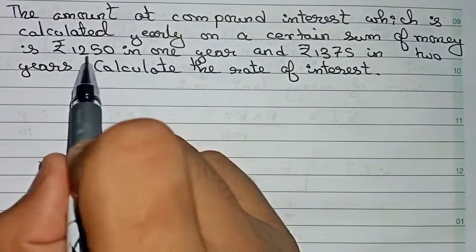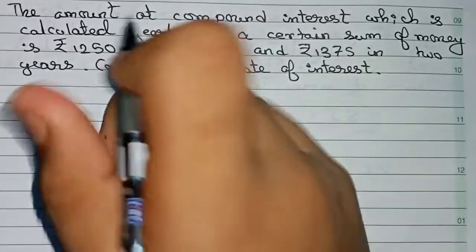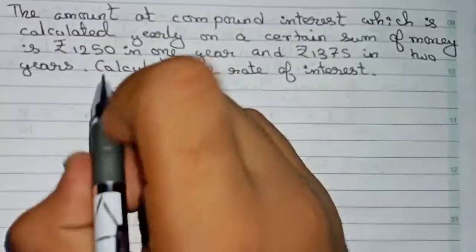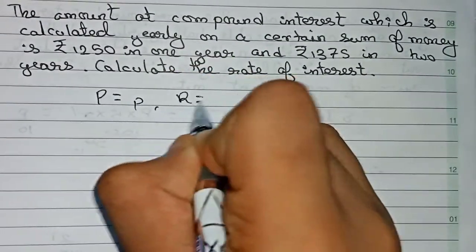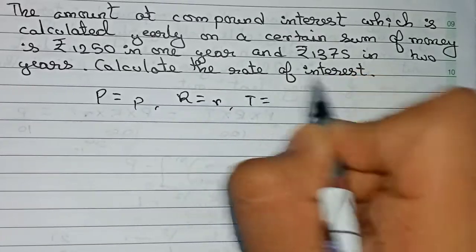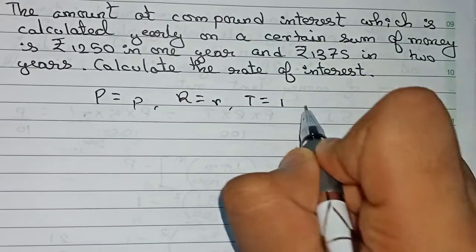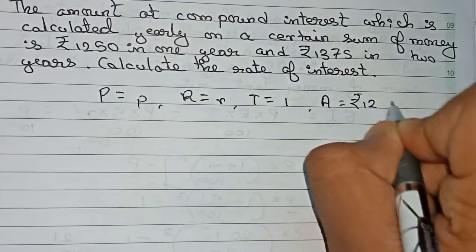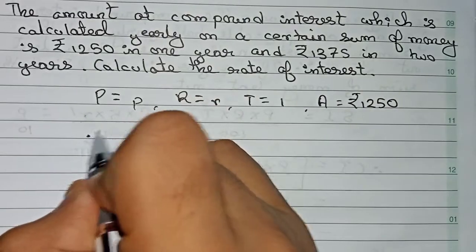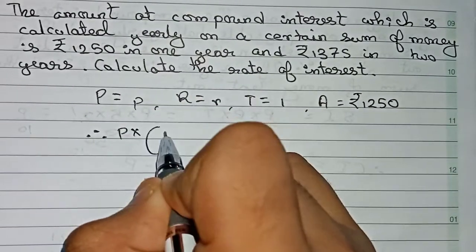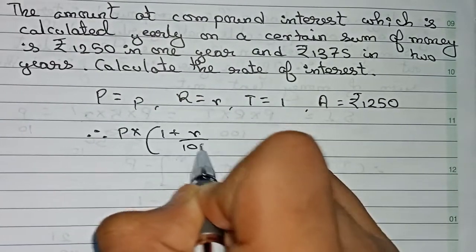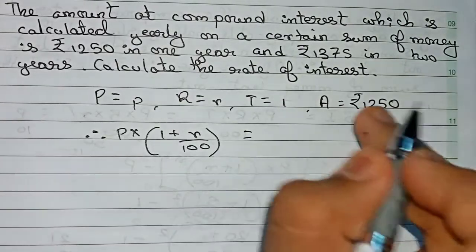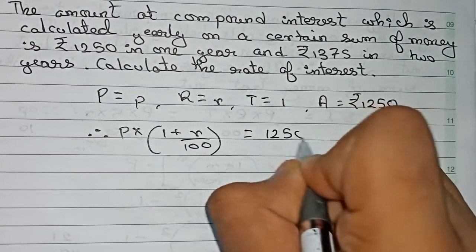For the first equation, using one year: the amount is 1250, principal is unknown P, rate is unknown R, and time is equal to 1. The formula is: principal into 1 plus R by 100 to the power N. Since N equals 1, this becomes P into (1 + R/100) equals 1250. This is our equation 1.